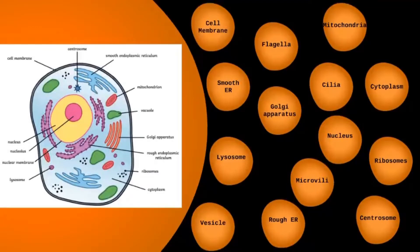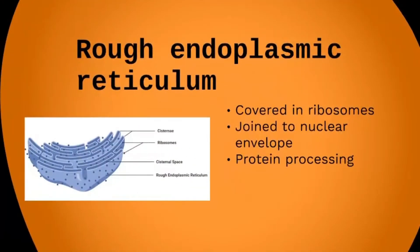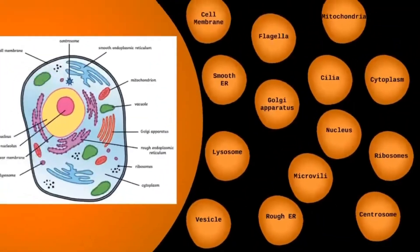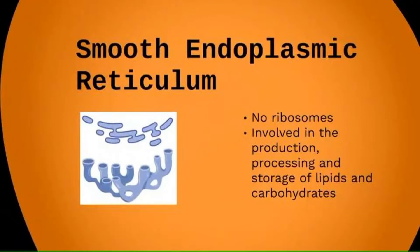Next we have two types of endoplasmic reticulum, or ER. The rough endoplasmic reticulum is joined to the nuclear envelope and is formed from continuous folds of membrane. Its surface is covered in ribosomes, which is what makes it 'rough.' The smooth endoplasmic reticulum doesn't have ribosomes on its surface and is involved in the production, processing, and storage of lipids and carbohydrates. The rough endoplasmic reticulum is responsible for processing proteins following their manufacture within the ribosomes.